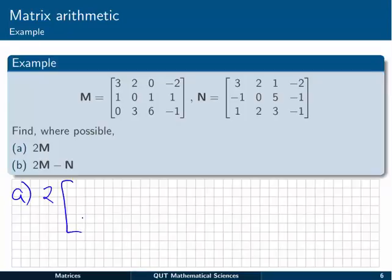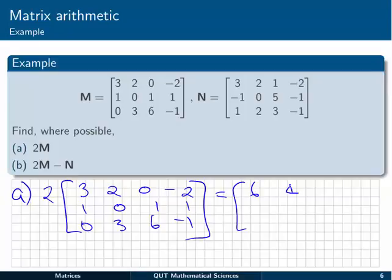So we're just going to go 2 multiplied by the M matrix: 3, 2, 0, minus 2, 1, 0, 1, 1, 0, 3, 6, minus 1. That's just going to be 2 multiplied by every single entry inside that matrix. So 2 by 3 is going to be 6, 2 by 2 is 4, 0, minus 4, and so on. 2, 0, 2, and 2. 0, 6, 12, and minus 2. So that's our 2 multiplied by M matrix.